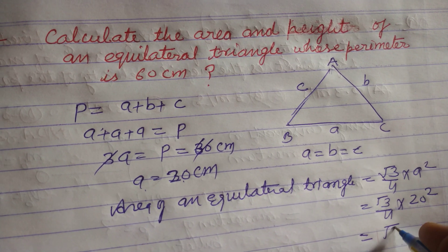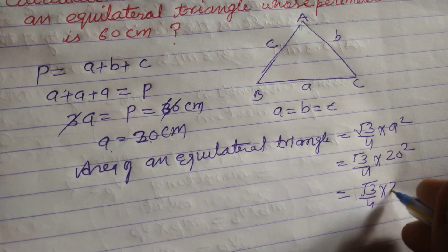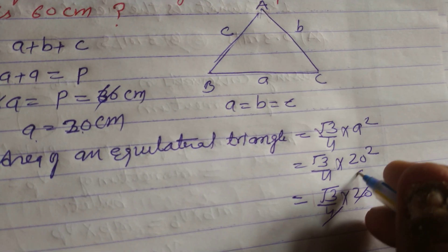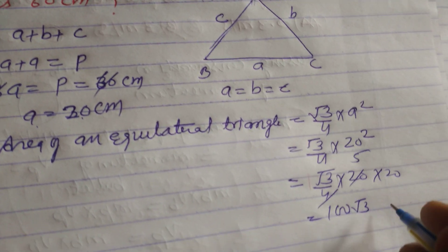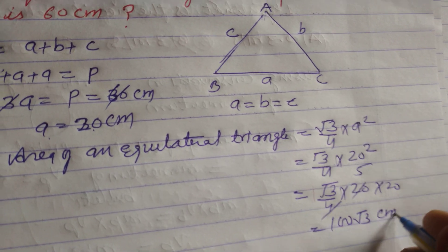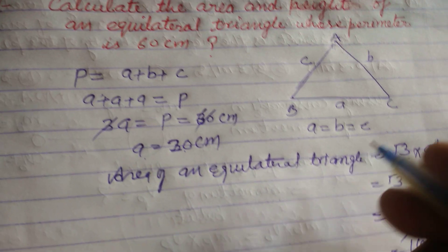So square root 3 by 4 into 20 into 20, this is 5, so 100 square root 3 cm square.